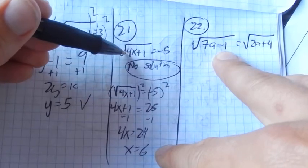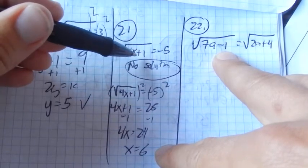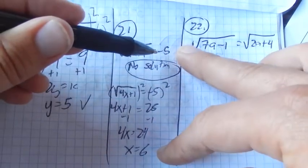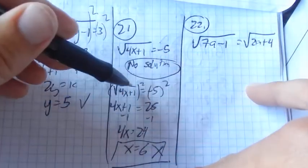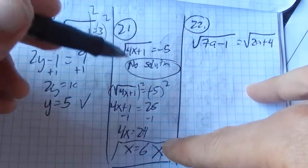4 times 6 is 24, plus 1 is 25. The square root of 25 is not negative 5. So it does not check out. Even if I don't see that right away and I get an answer, I'd have to remember to check it.